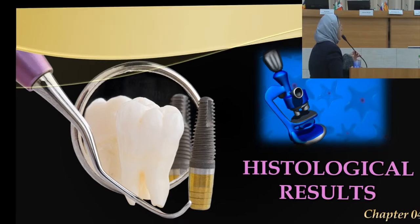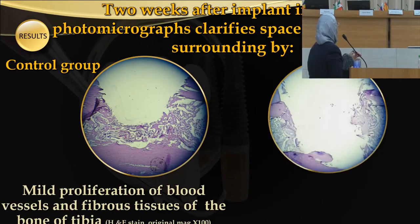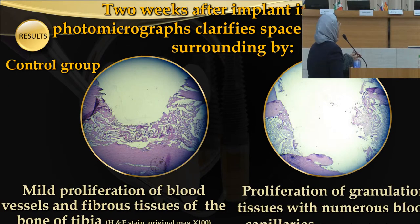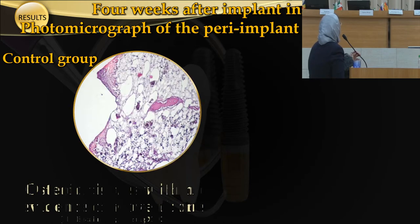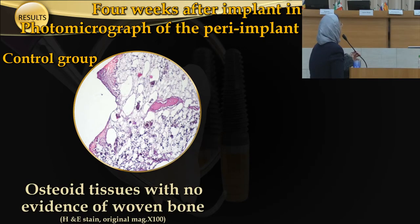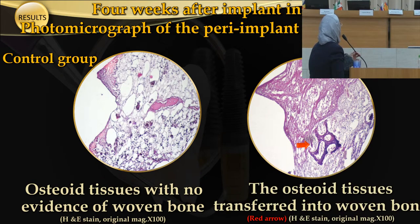Histological results: two weeks after implant insertion, photomicrographs show that in the control group there was mild proliferation of blood vessels and fibrous tissues of the tibial bone, while in the test group there was proliferation of granulation tissue with numerous blood capillaries. Four weeks after implant insertion, photomicrographs of the peri-implant interface show osteoid tissues with no evidence of woven bone in the control group, whereas in the test group the osteoid tissues had transformed into woven bone.